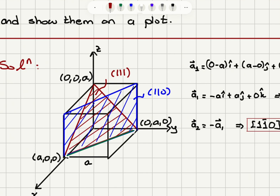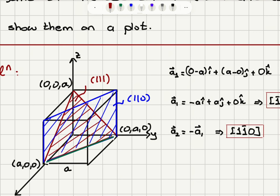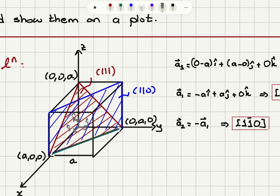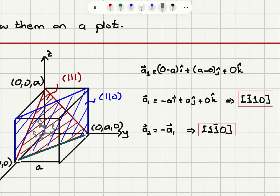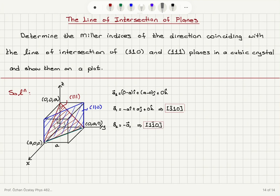To find these vectors we look at the unit vectors î, ĵ, and k̂. Vector a1 goes from a00 to 0a0: it is −aî + aĵ + 0k̂, giving the direction [1̄10]. Vector a2 points in the opposite direction, giving [11̄0].